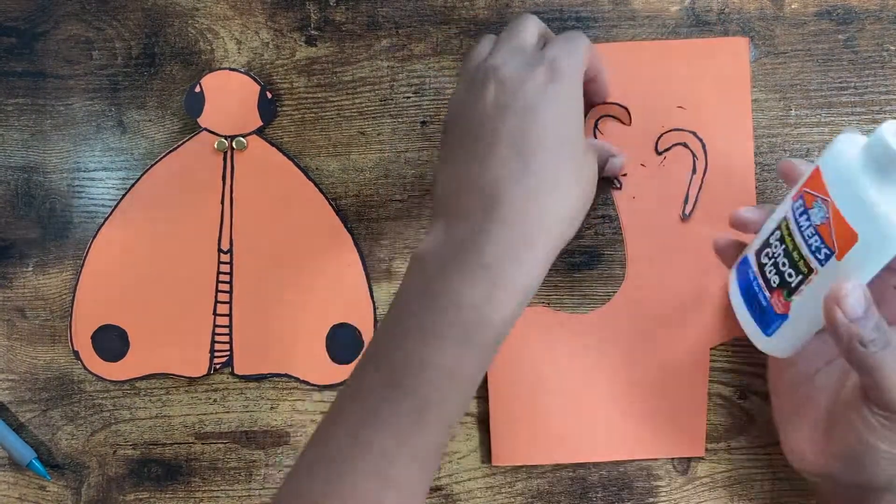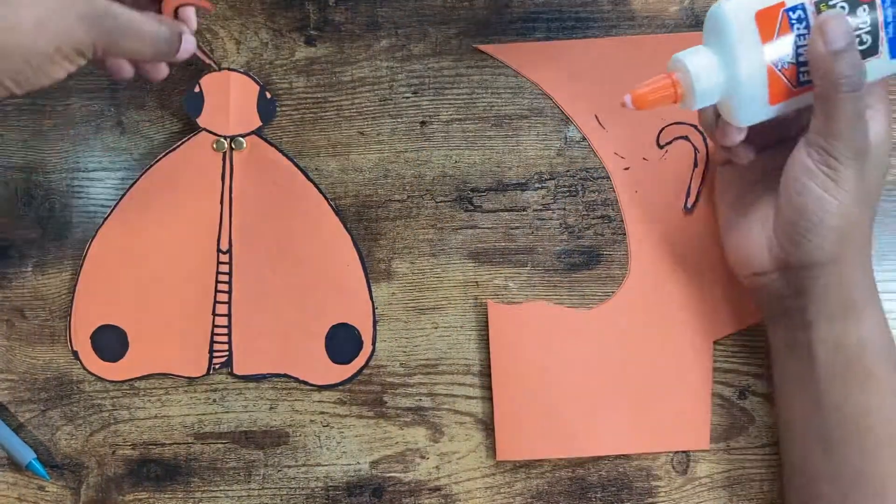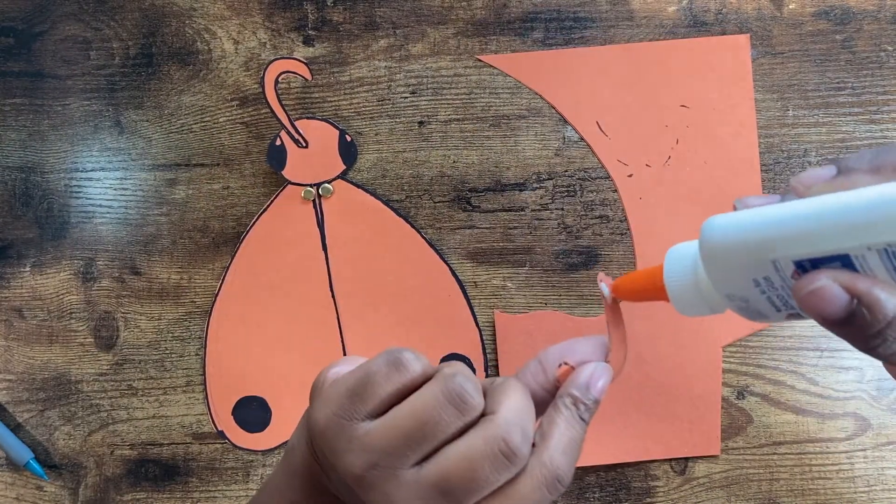Once you've got that done, we're going to grab our glue and put a small dab on each of the antennae. And for this one, this glue is a little bit wet, so you might have to wait a little moment for it to dry.